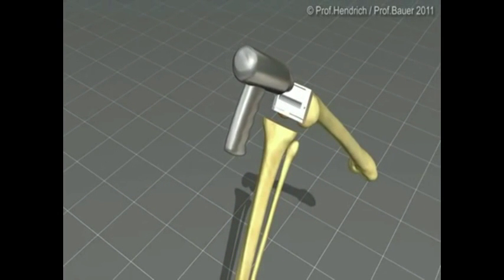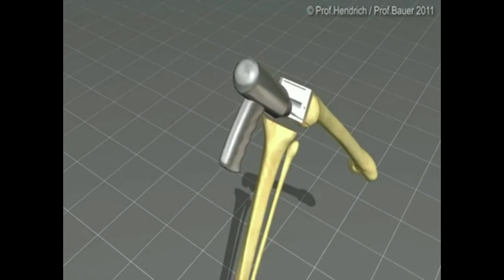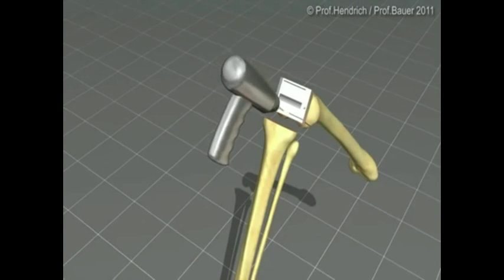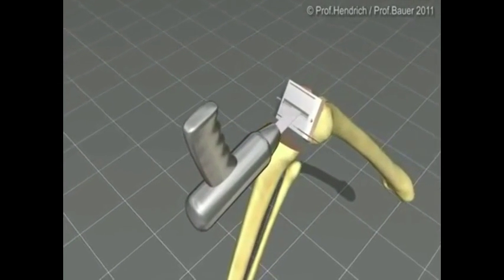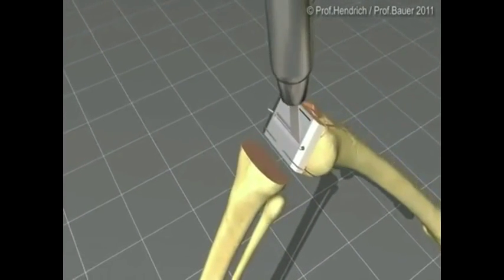The next saw block is used to remove the anterior and posterior part of the femoral condyles, as well as some minor diagonal cuts are performed.